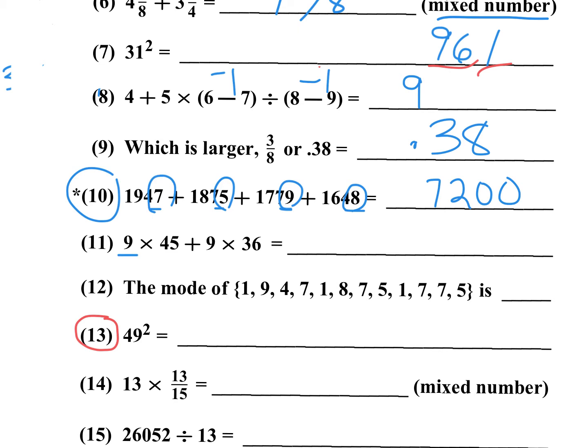The next one is you can factor out a 9. And then you're going to have 45 plus 36 times 9. 45 plus 36. If you add these two together, you get 81. 81 times 9 is 729.